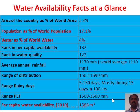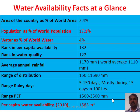Here we can see total availability of water based on the world's area and the country's area. India is having 2.4% of world's area. If we consider world's population, we are having around 17.1% of population, and in percentage of world water we are having only 4%. The rank in per capita water availability is 132 and rank of water quality is 122. The average annual rainfall of India is around 117 cm or 1170 mm, which is more than the world's average of 1110 mm.